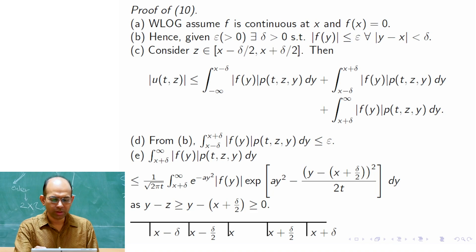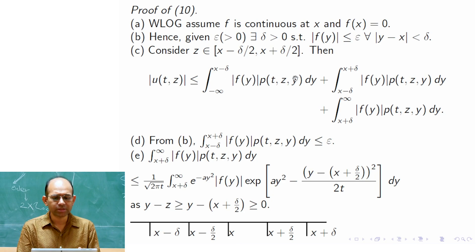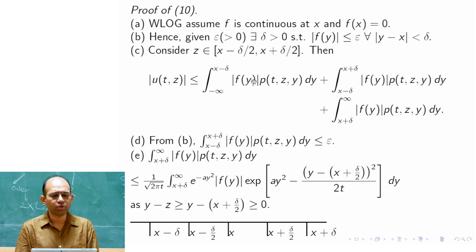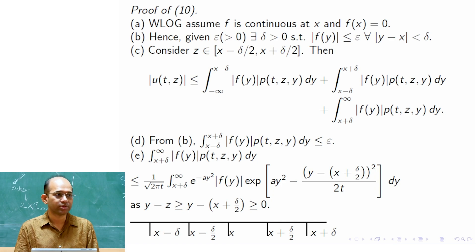For the third integral (y from x+δ to ∞), a symmetric argument applies to the first integral. The heat kernel p is symmetric around z rather than x, but since z is close to x — within the δ/2 neighborhood — we can manage the small shift. That is why z was taken in the interval (x−δ/2, x+δ/2).